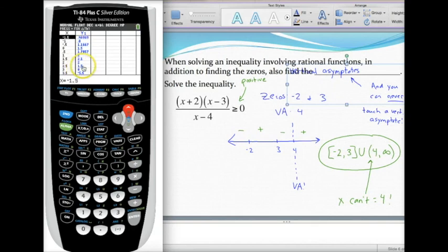And so right there when x is three, there was one of my zeros. If I keep scrolling to negative two, there's a zero as well. So I can find them that way. So anyway, I've determined my intervals where my graph is positive or negative.